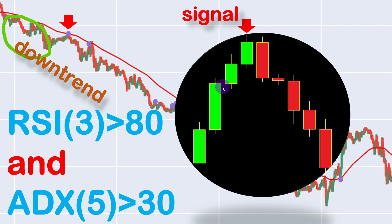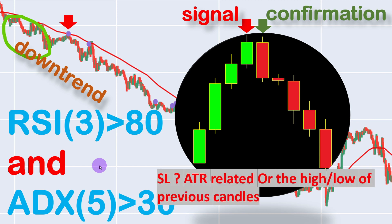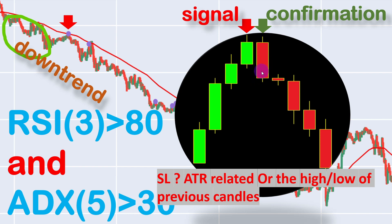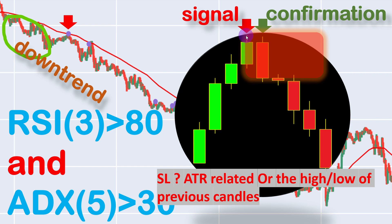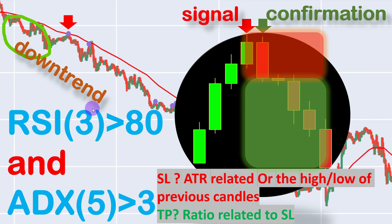If this is where the signal is triggered with the 50 MA, RSI, and ADX, we enter the market after the confirmation candle is closed. For the stop loss we will test two methods: either a stop loss distance that is ATR-related (like 2× or 3× the ATR), or we look back for the highest high or lowest low of the previous few candles. For a selling trade with a bearish confirmation candle, the stop loss is set at the highest high among the previous two or three candles. We enter at the closing price of the confirmation candle.